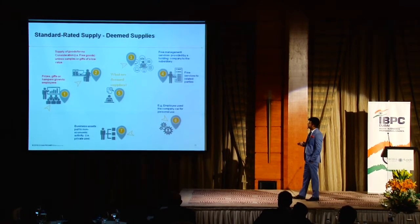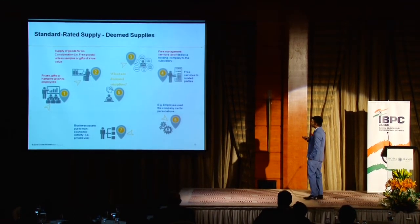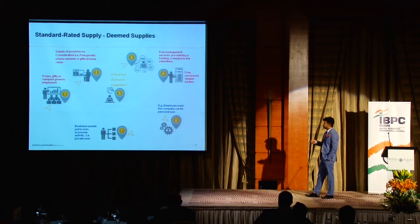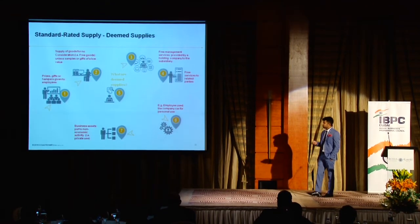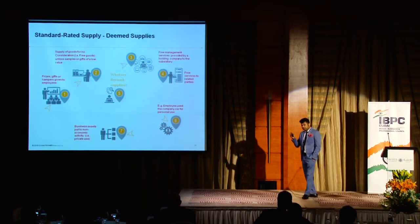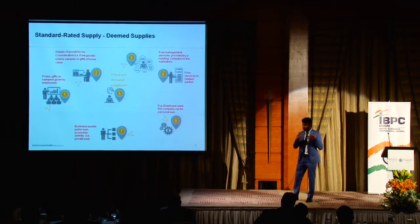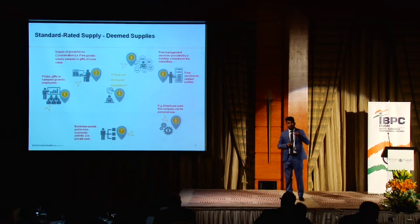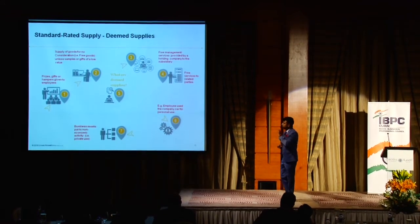Employee use of a company car for personal use and business assets put to non-economic or private purposes are also examples of deemed supply. There can be multiple scenarios leading to tax evasion. The government addresses these by saying: whether you have consideration or no consideration, whether you're making a supply or not — if they can establish the relationship, you fall within deemed supply and as a business you're supposed to collect 5% tax on that.